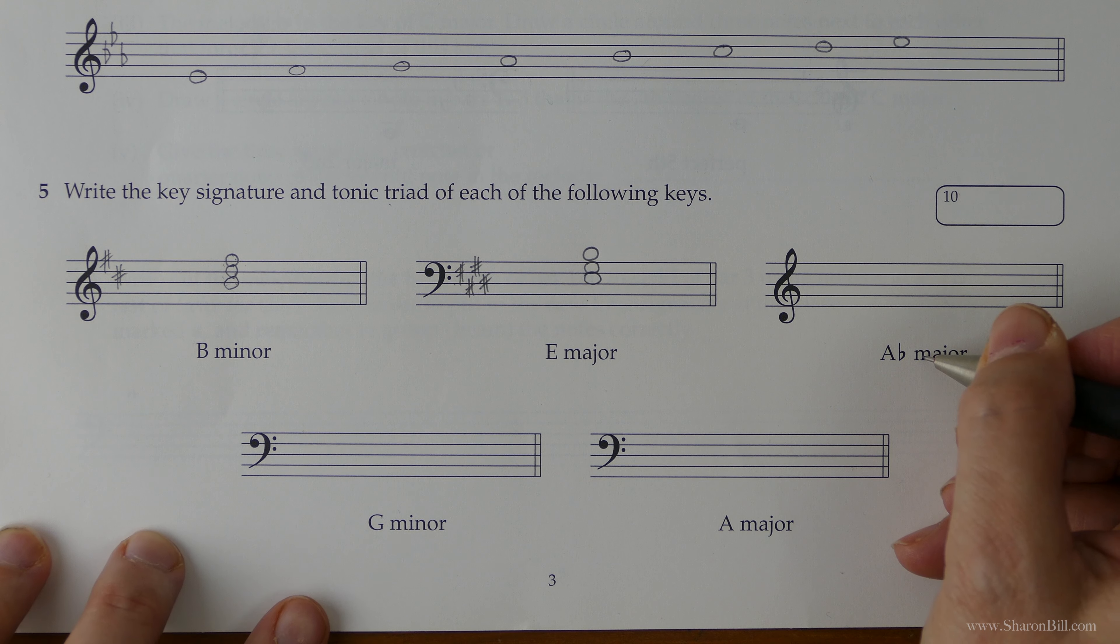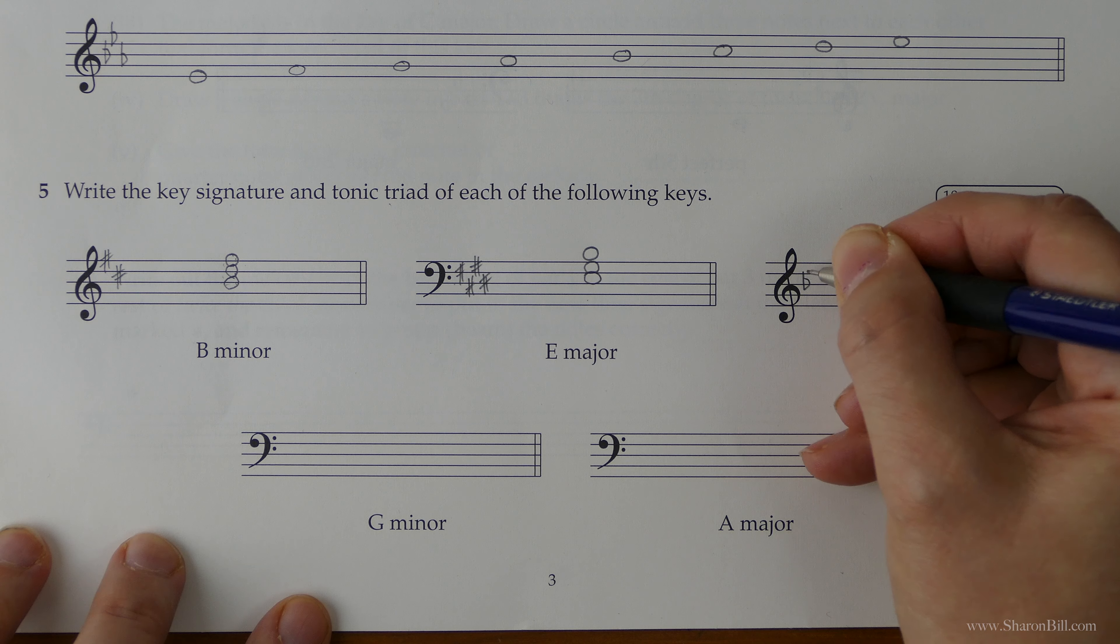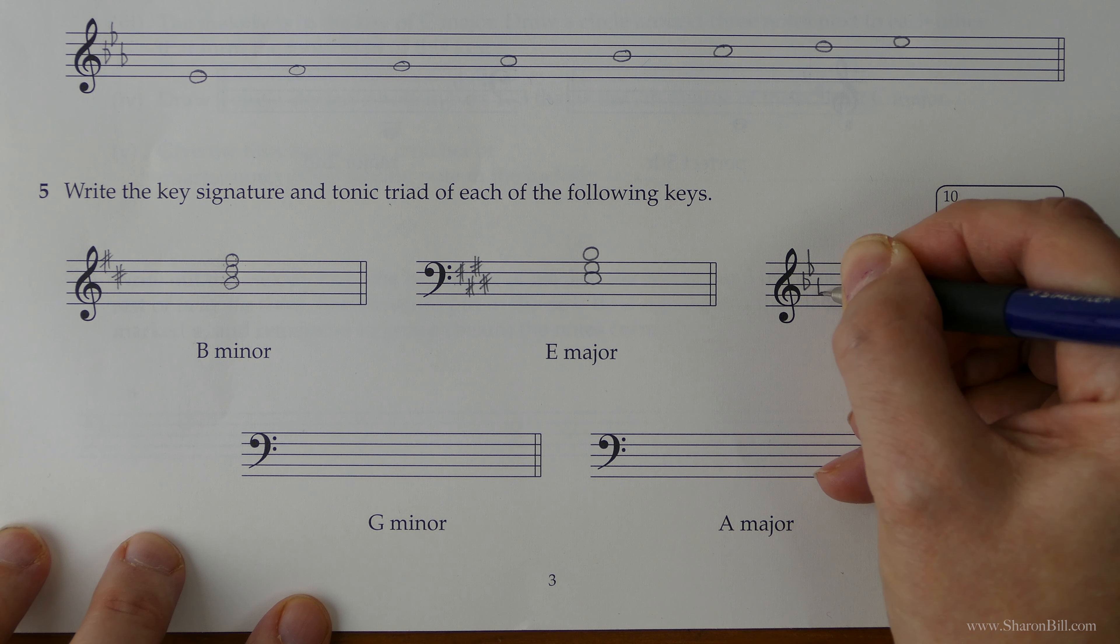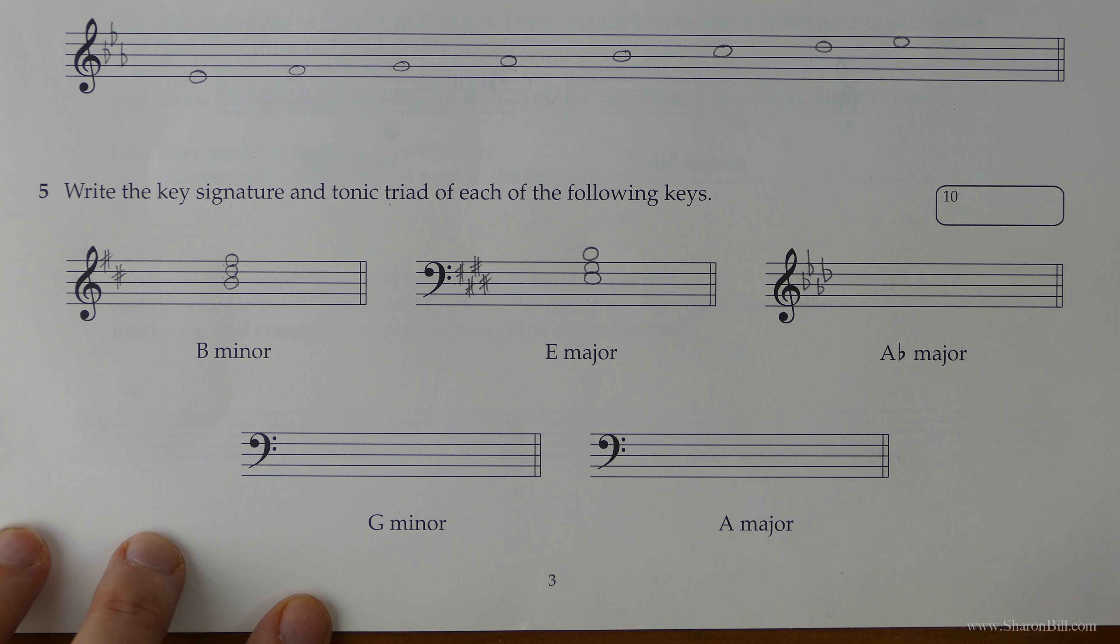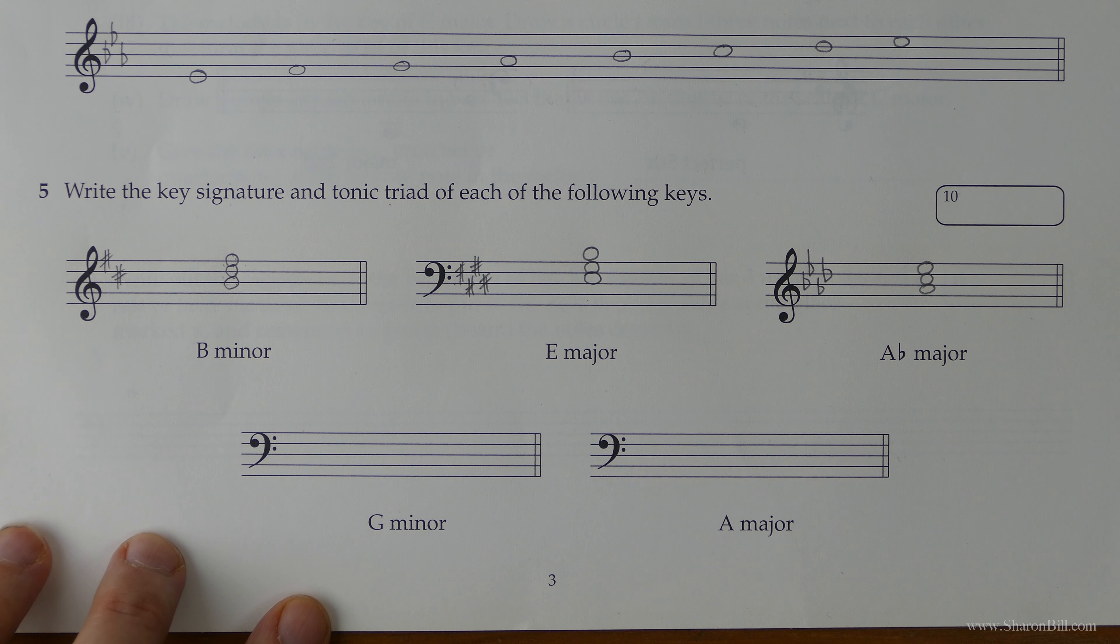A flat major has a key signature of B flats, E flats, A flats and D flats. So now we need to find note A, the spaces spell face, F, A, first, third, fifth. There we go.